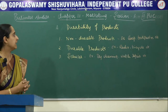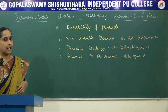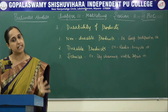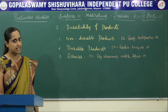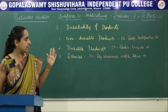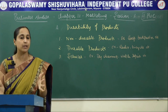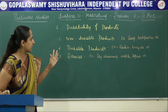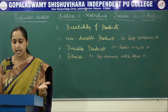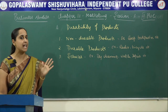Now let us see the classification of products on the basis of durability. First one is non-durable products. Non-durable products means you can use these products only once. For example, soap, toothpaste, detergents and stationery products — all these products you can use only once. So that we call it as non-durable products. These products have a very small profit margin and are available in almost every locality. All these products need to be heavily advertised.